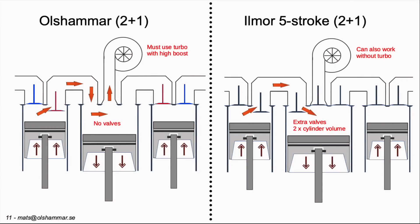So comparing these two side by side. The Oldsummer engine must use a turbo with high boost to get efficiency. It doesn't have any valves at all for the extra cylinder. The Ilmor 5-stroke engine you need extra valves for the cylinder and you need about twice the volume in this cylinder compared to the other one. It can also work without the turbo.